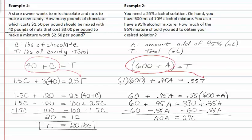Divide by .4 on both sides, and A is equal to 675. And remember that's in milliliters. So they ask, how much of the 95% mixture should you add to obtain your desired solution? And we found that out to be 675 milliliters.